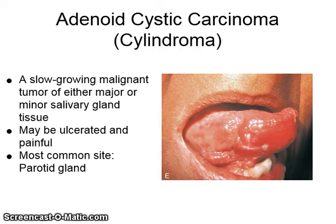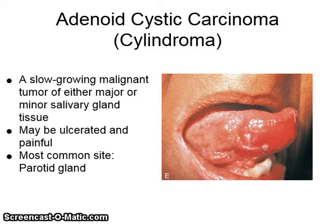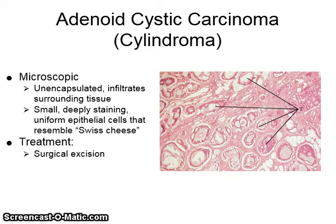Adenoid cystic carcinoma, or cylindroma, is a slow-growing malignant tumor of either major or minor salivary gland tissue. It may be ulcerated and painful. The most common site is the parotid gland. Microscopically, it shows unencapsulated infiltrates in the surrounding tissue.